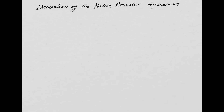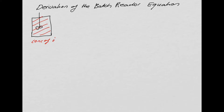Today we're going to look at the derivation of the batch reactor equation. A batch reactor is typically a tank, and usually the contents of the tank are fairly well stirred so that the contents have a uniform concentration. We'll call the concentration of some species i in that tank Ci, the number of moles of i in that tank Ni, and the volume V.